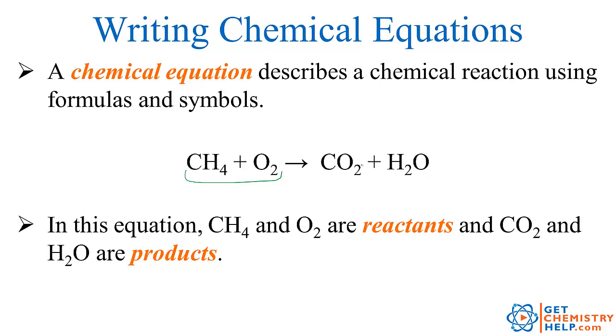The ones on the right hand side are being produced so we call those the products. So the reactants are always on the left hand side of the arrow and the products are always on the right hand side of the arrow.